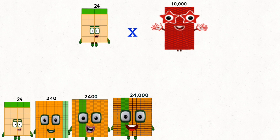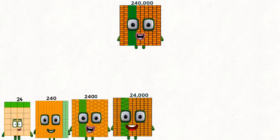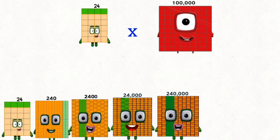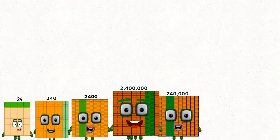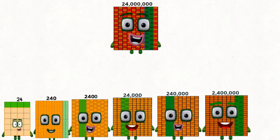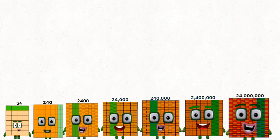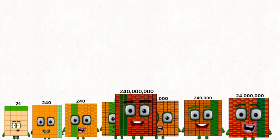24 times 10,000 equals 240,000. 24 times 100,000 equals 2,400,000. 24 times 1,000,000 equals 24,000,000. 24 times 10,000,000 equals 240,000,000.